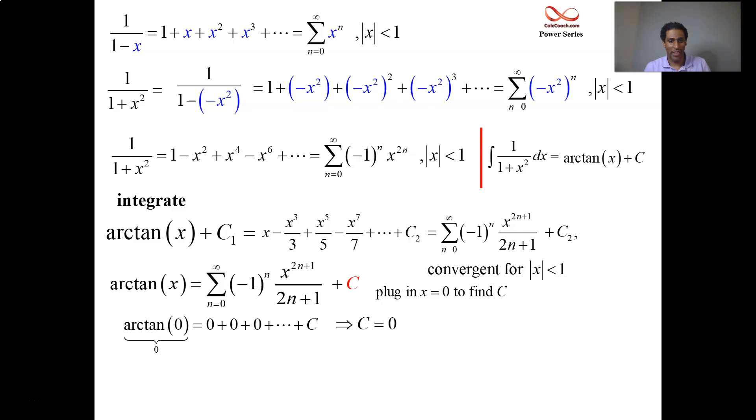So we did it. We have the arctan of x, represented by this power series. We have the first four non-zero terms. And as a technicality, it's convergent at the endpoints. Well, conditionally convergent, if you want to get really technical.